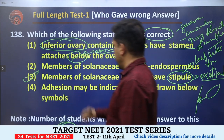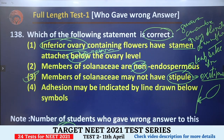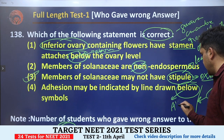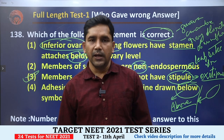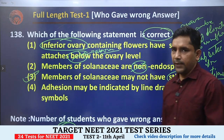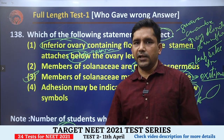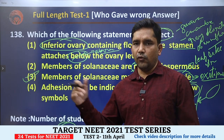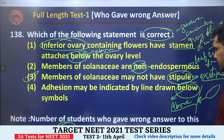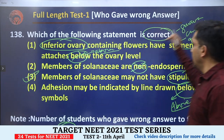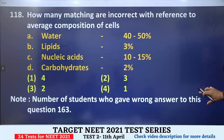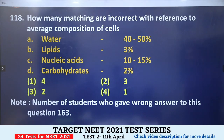The third option is correct because Solanaceae members are ex-stipulate. The fourth option states that adnation may be indicated by a line drawn below symbols — this is incorrect; it should be ABOVE the symbols. In families like Liliaceae where calyx and corolla show no difference, the structure is called perianth. The androecium attached to the perianth creates an epiphyllous condition. So the third answer is correct for question 138.